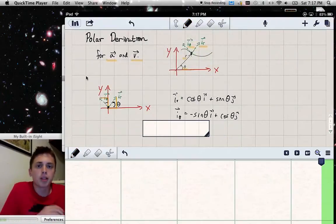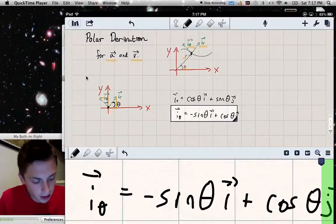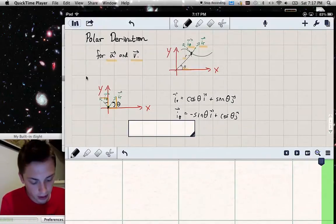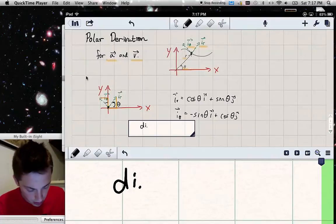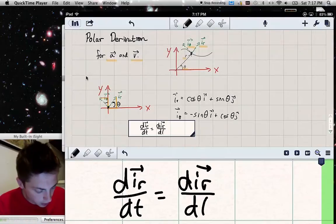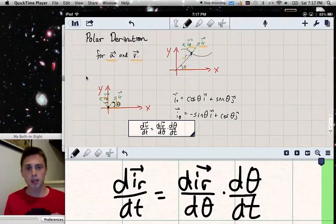Now we need to find the rate at which i_r and i_theta change with respect to time. But looking at i_r and i_theta, I see that they depend on theta. So if I take the rate that i_r, for example, changes with respect to theta, and I multiply that rate by how fast theta changes with respect to time, that gives me how fast i_r changes with respect to time.